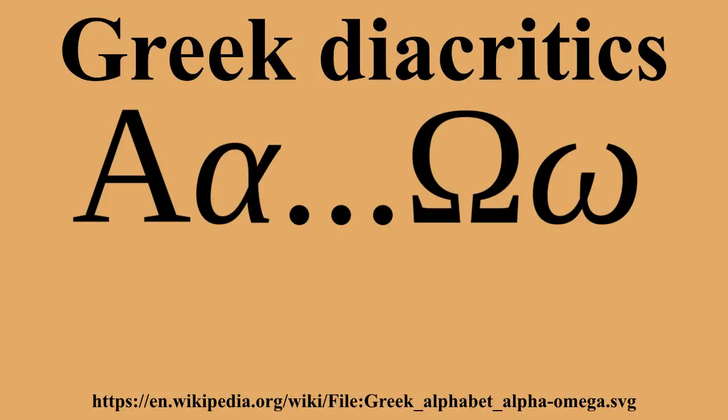The original Greek alphabet did not have any diacritics. The Greek alphabet is attested since the 8th century BC until 403 BC. Variations of the Greek alphabet, which used capitals exclusively, were used in different cities and areas.